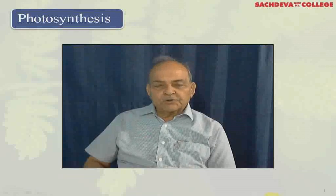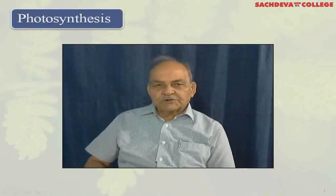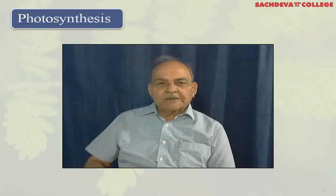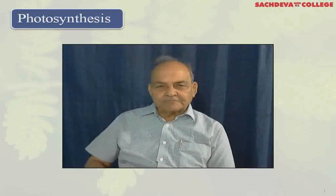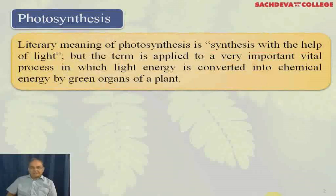Photosynthesis is a very important process. It is not only providing food to the plants and to human beings, but it is also maintaining the balance between carbon dioxide and oxygen. The literary meaning of photosynthesis is synthesis with the help of light, but the term is applied to a vital process in which light energy is converted into chemical energy by the green organs of a plant.